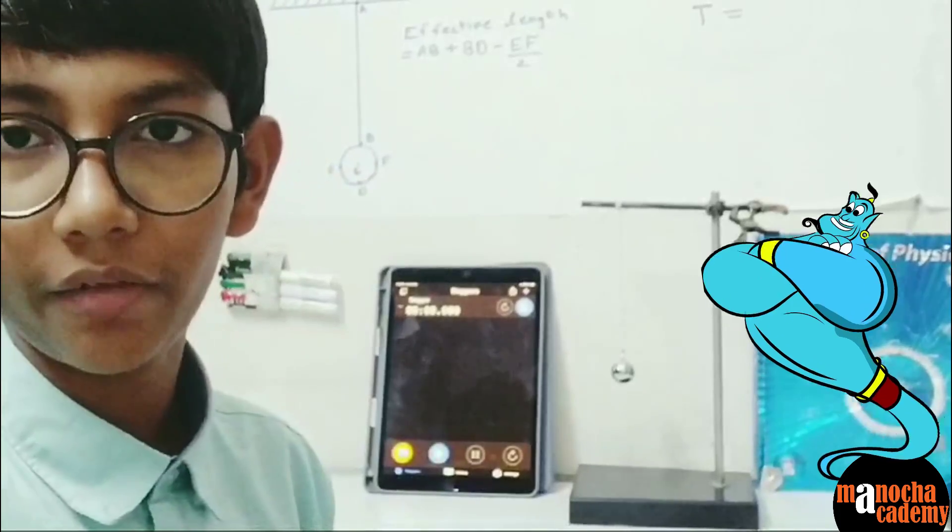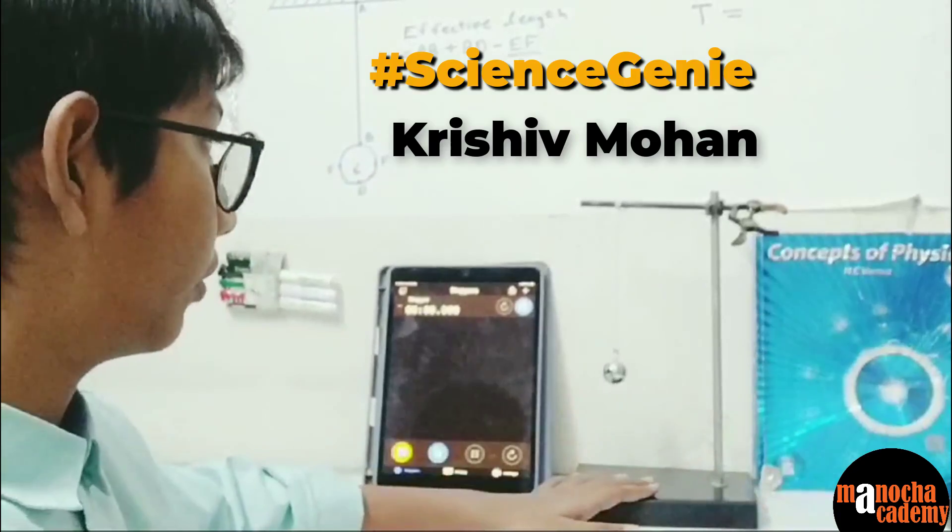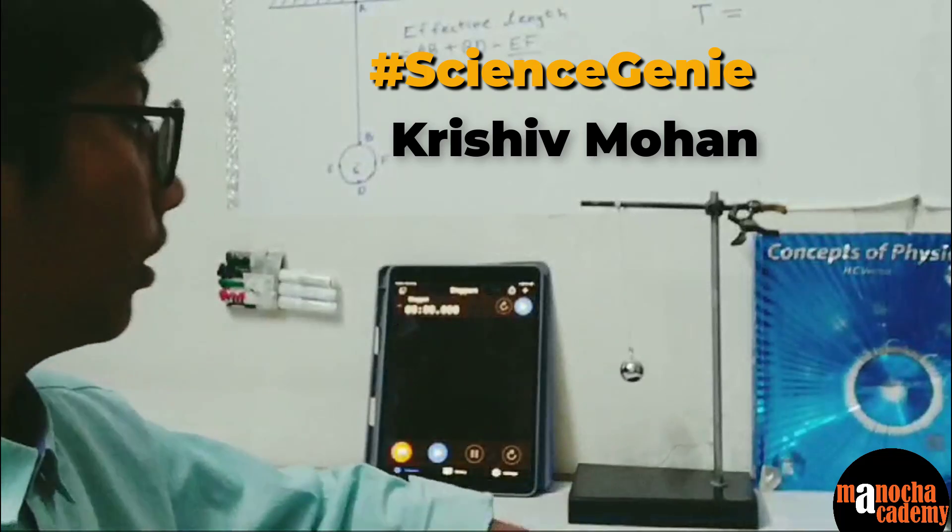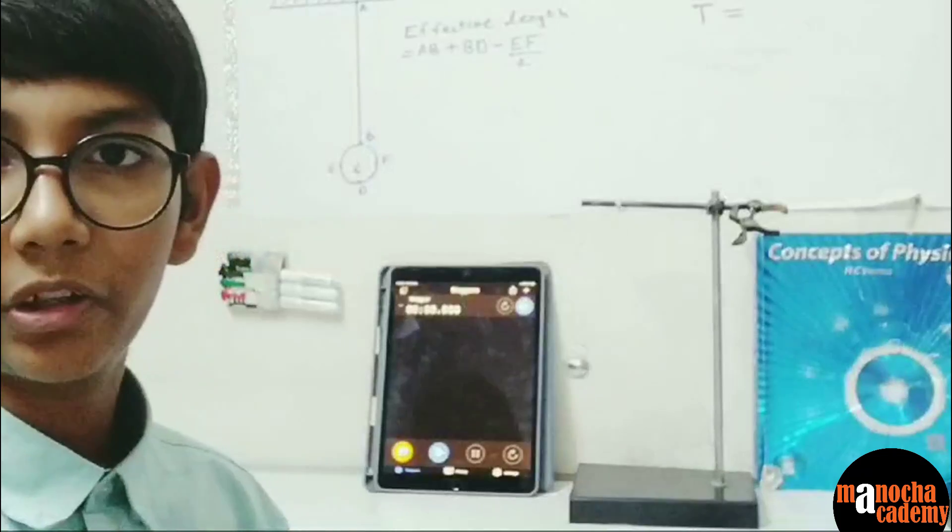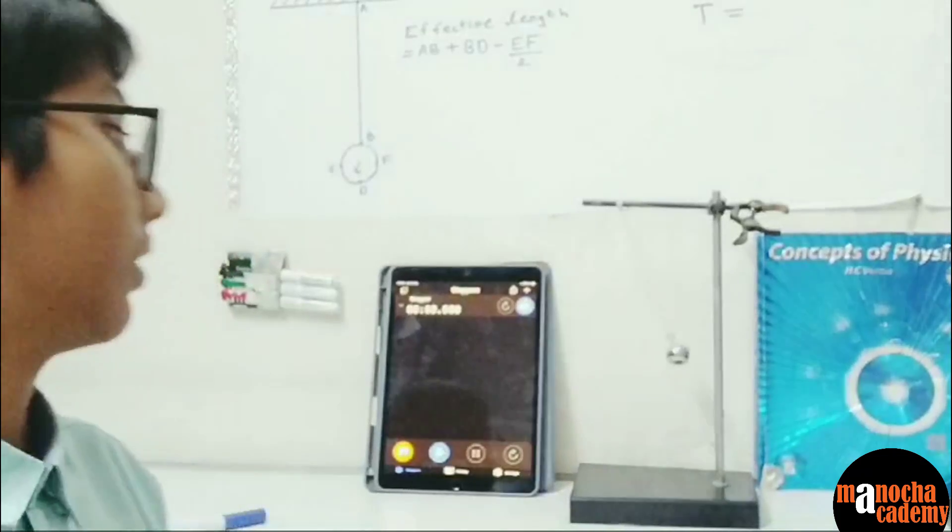We can determine the value of gravity using a simple pendulum. To find the value, first we need to find the time period of the pendulum, which is the time taken by the pendulum to complete one single oscillation.